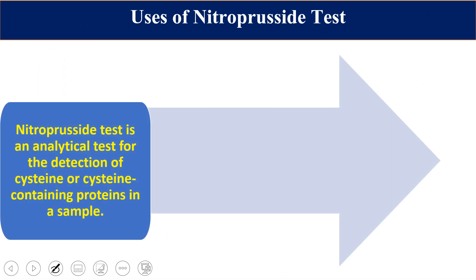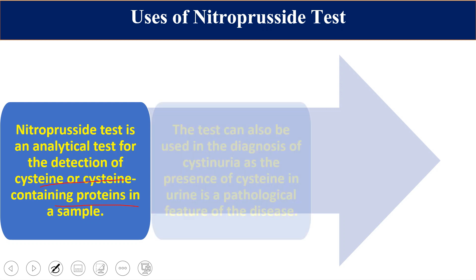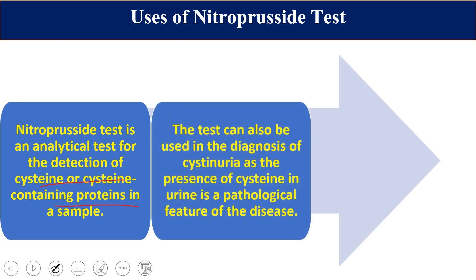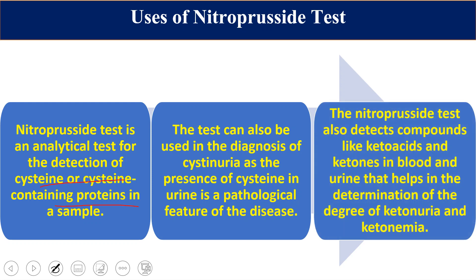The nitroprusside test is an analytical test for detection of cysteine and cysteine-containing protein solutions. It can also be used for diagnosis of cystinuria — the presence of cysteine in the urine of a diseased person. This test also helps in detection of compounds like ketoacids or ketones in blood and urine, helping in determination of ketonuria or ketonemia. Ketonuria means ketone bodies in urine; ketonemia means excess ketones in blood; together they result in ketosis.